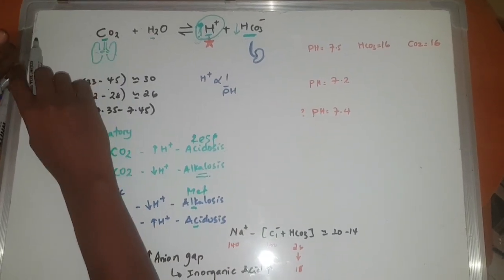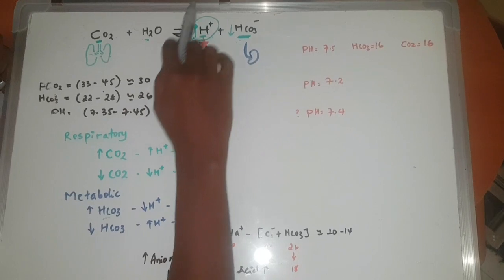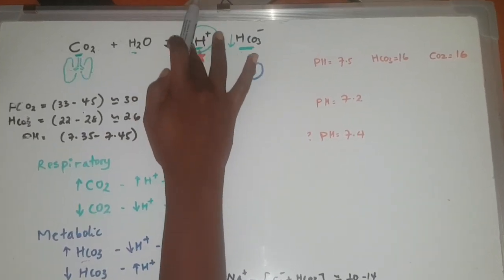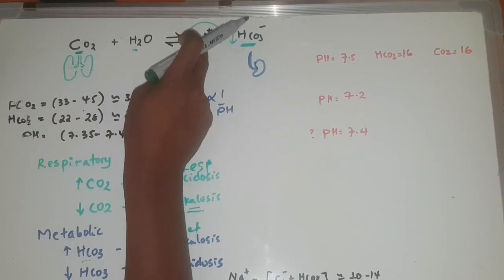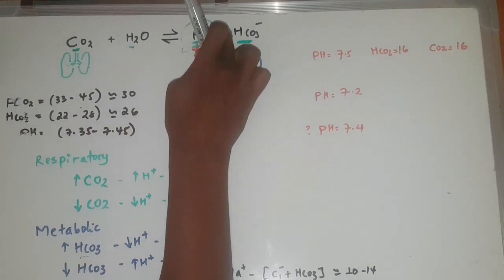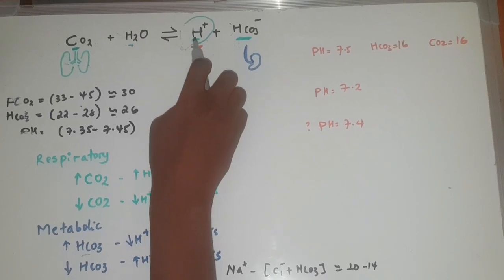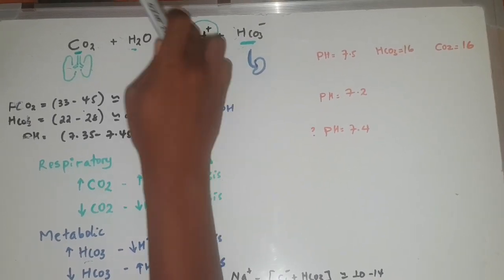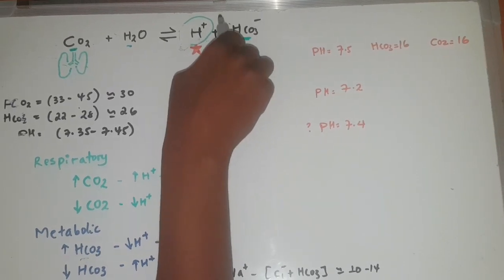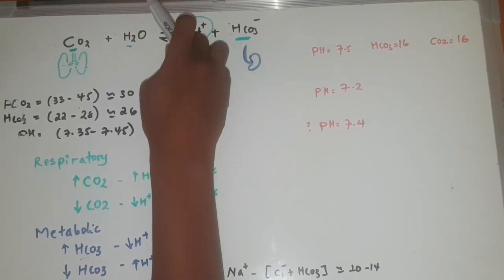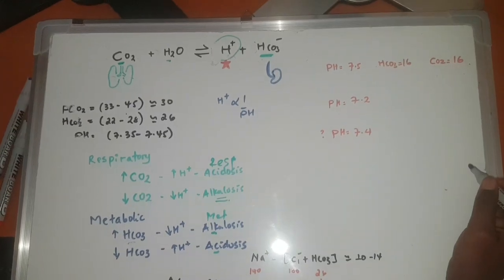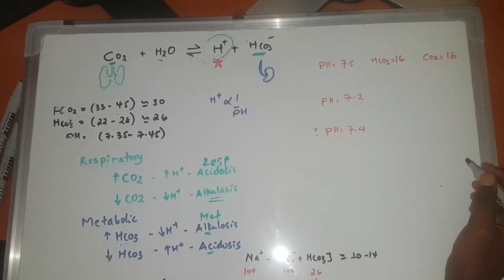To summarize: if carbon dioxide is high, the reaction is more acidic with more hydrogen. If carbon dioxide is low, it is less acidic. If bicarbonate is high, we get more hydrogen — metabolic alkalosis. If bicarbonate is low, free hydrogen increases — metabolic acidosis.